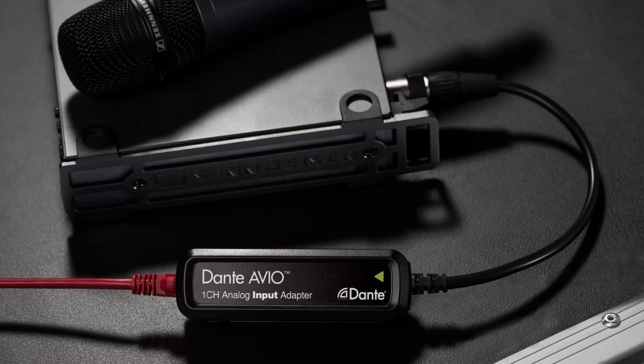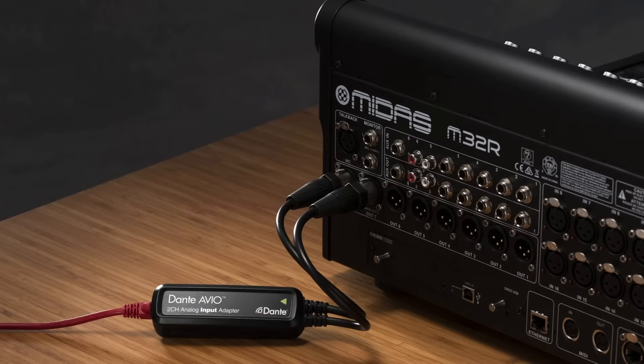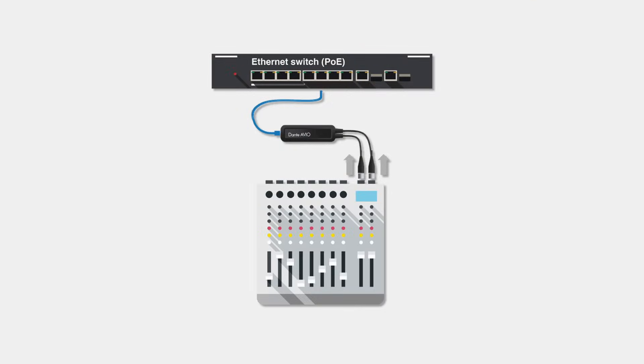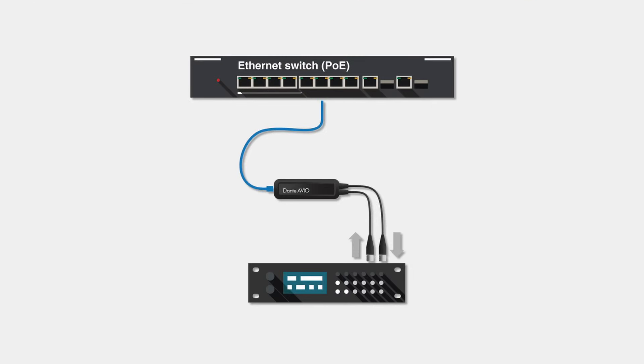Turn amplifiers, powered speakers, playback devices, wireless microphone receivers, and any other analog device into a Dante endpoint using a Dante analog input or analog output adapter. You can even route audio through amplifiers, DSPs, or mixing consoles with AES3/EBU.